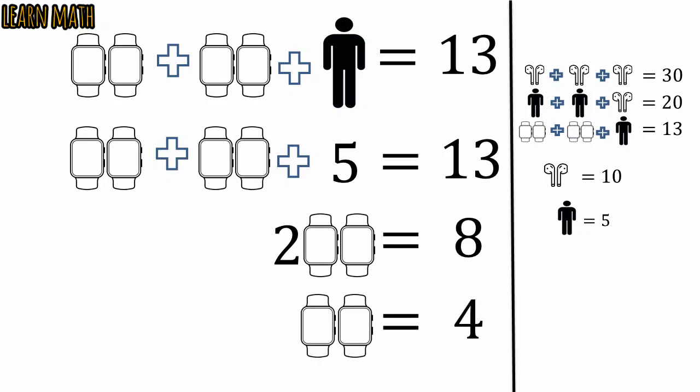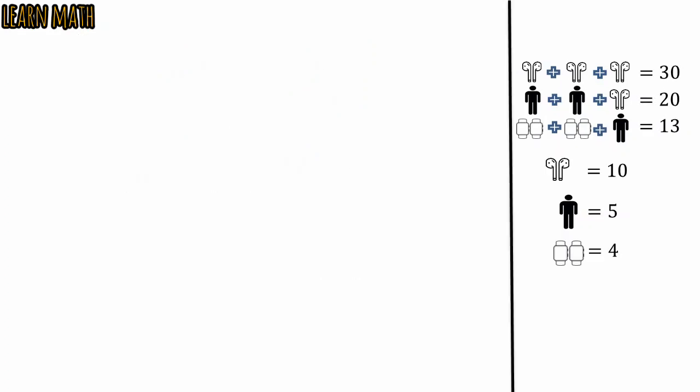These were the three unknowns in this question. One pair of ear parts is equal to 10, man is equal to 5, and one pair of watches is equal to 4. One pair of ear parts is equal to 10 so one single ear part is equal to 5. Man is equal to 5 and one pair of watches is equal to 4 so one single watch is equal to 2.